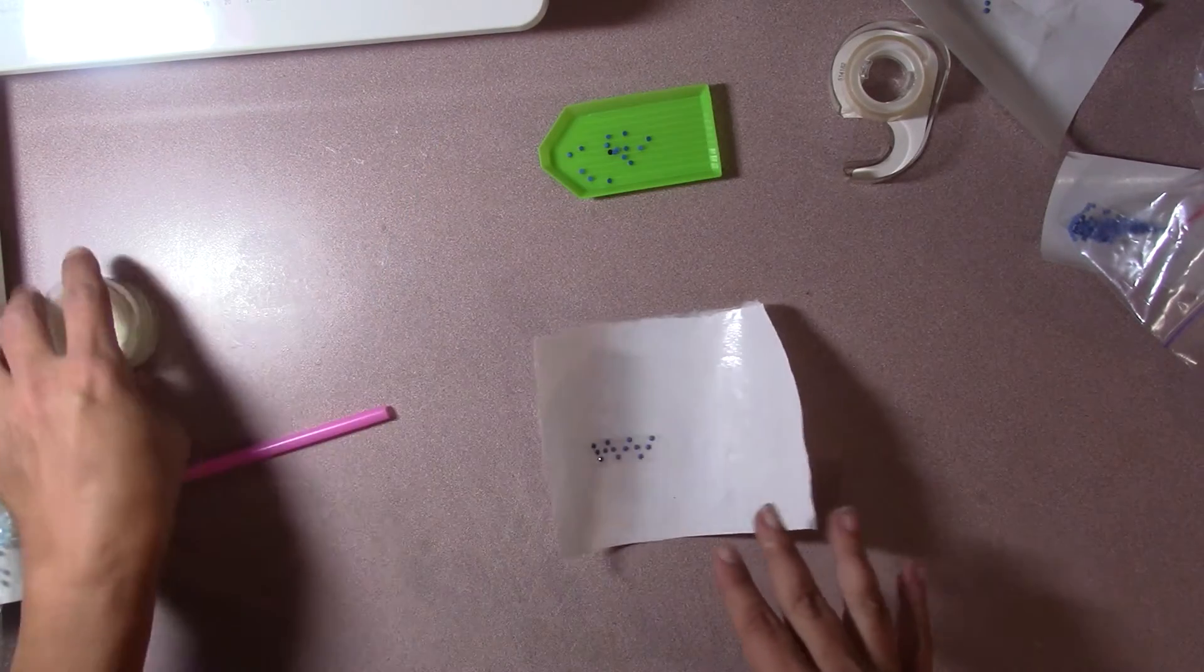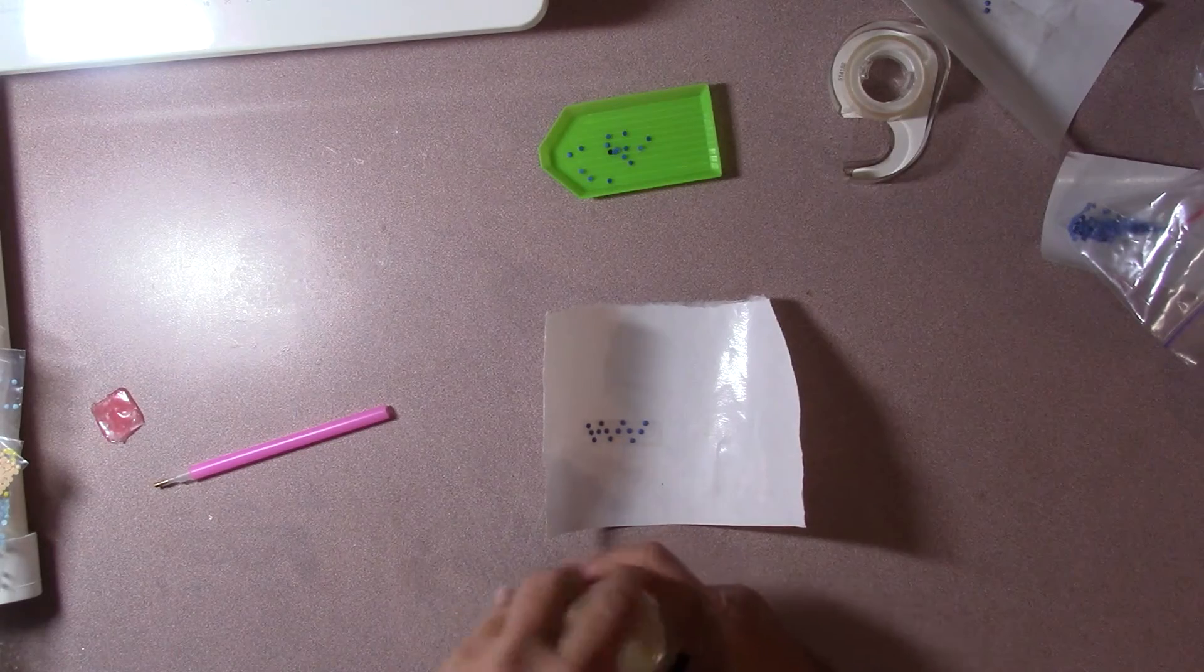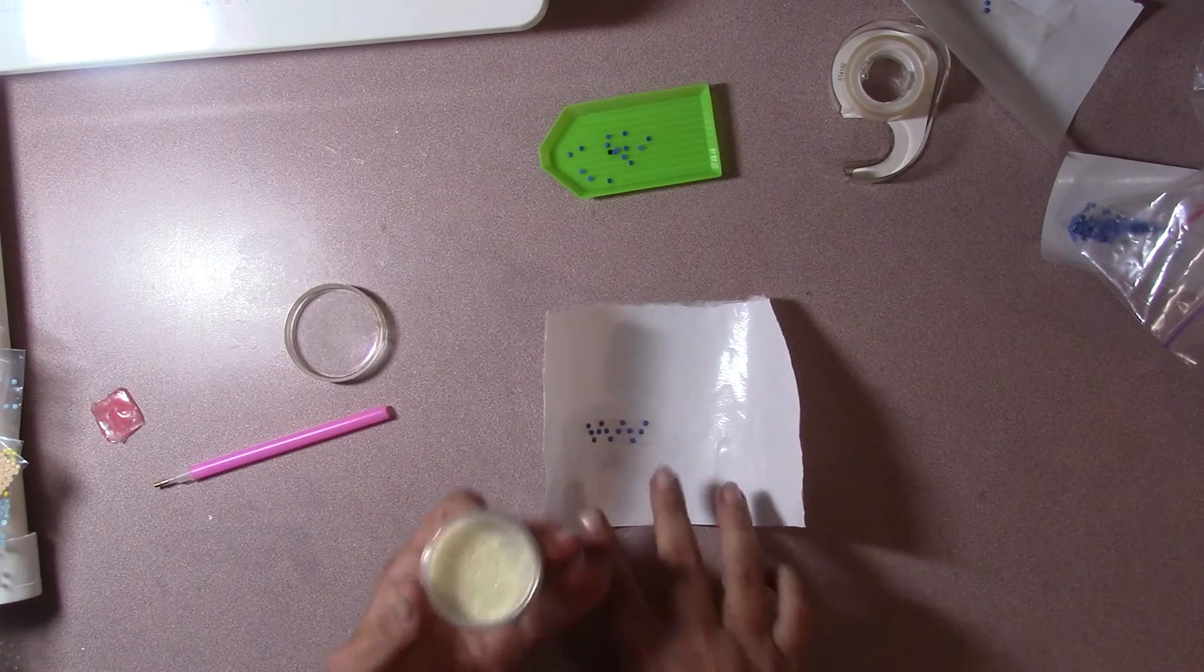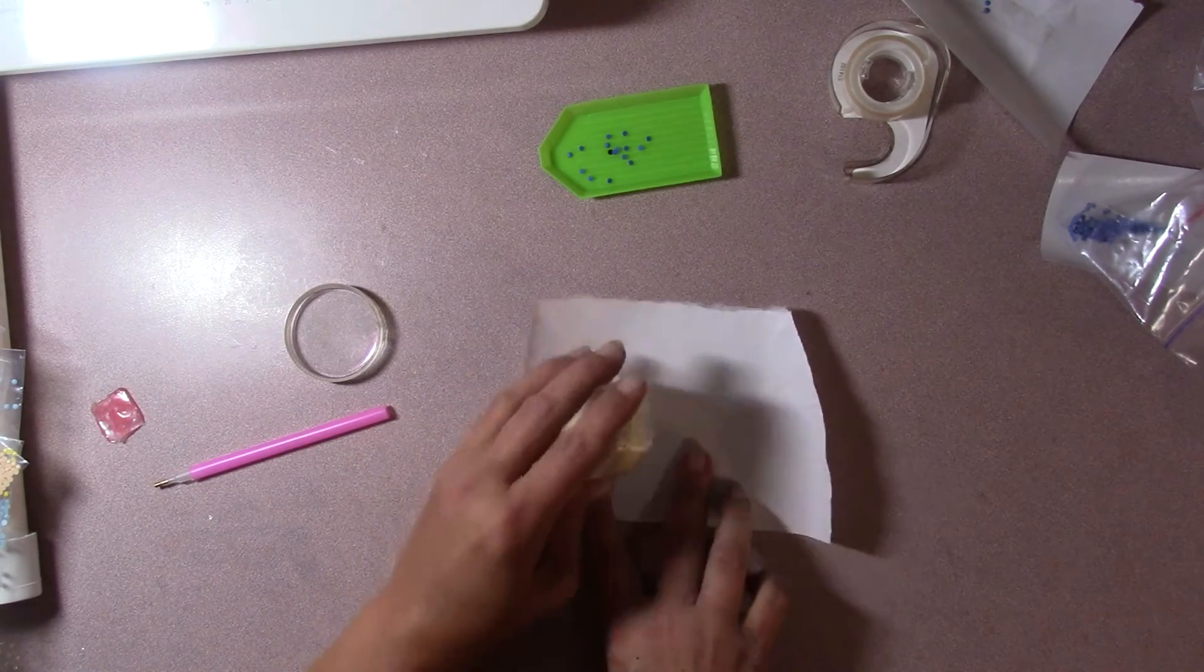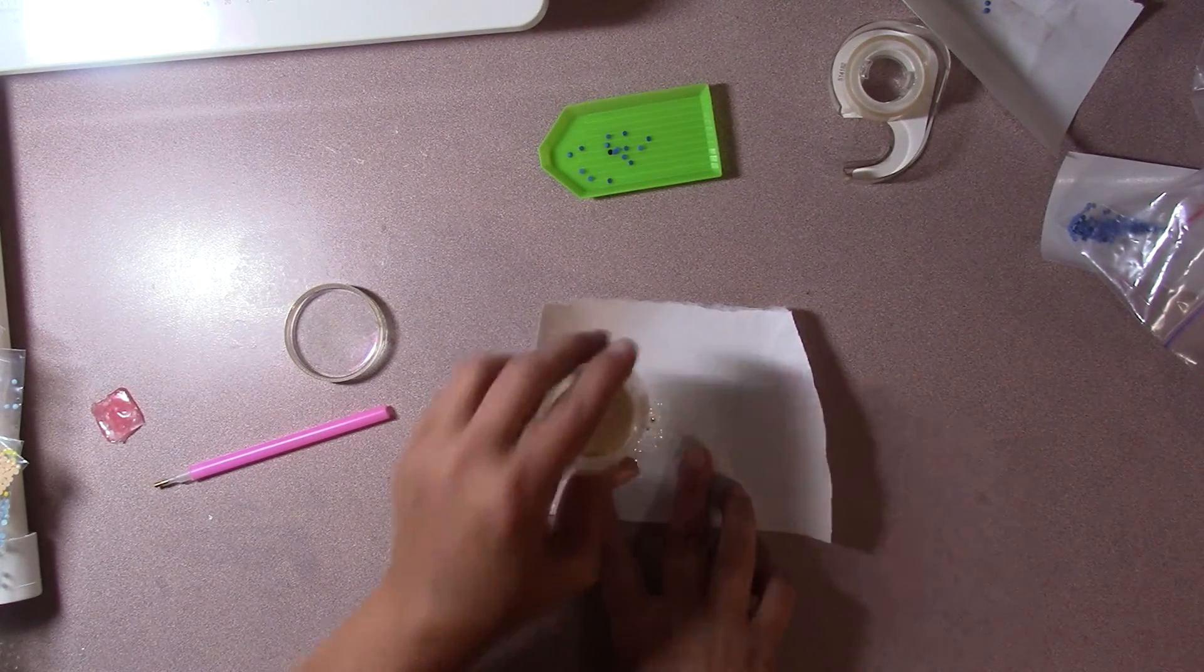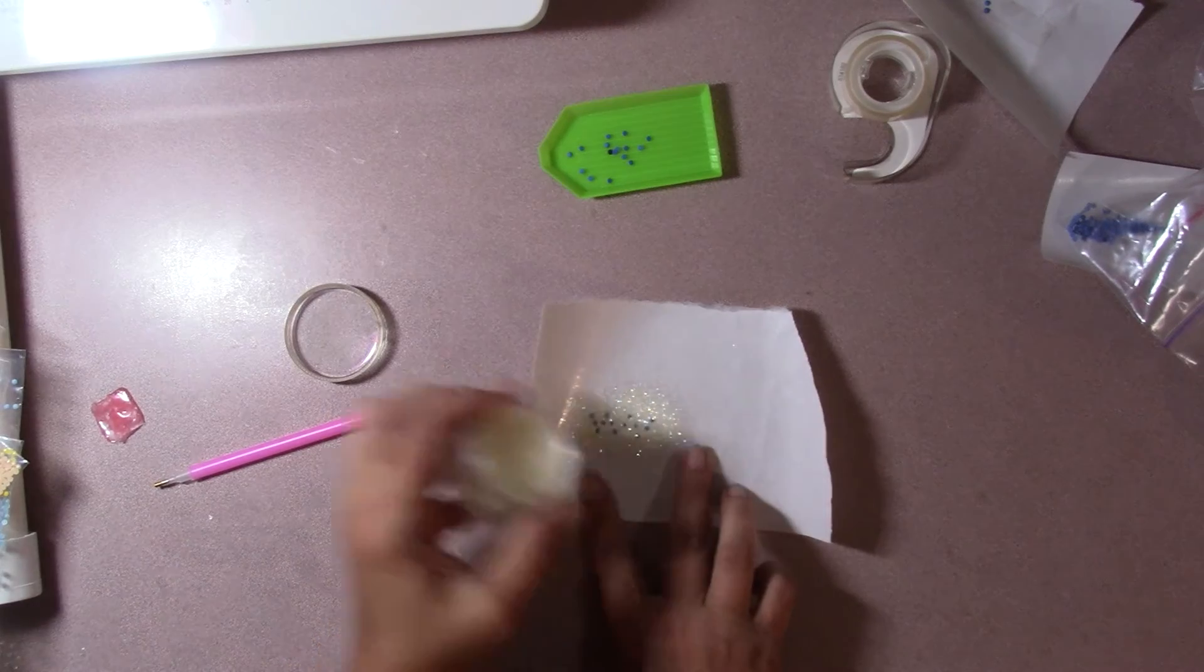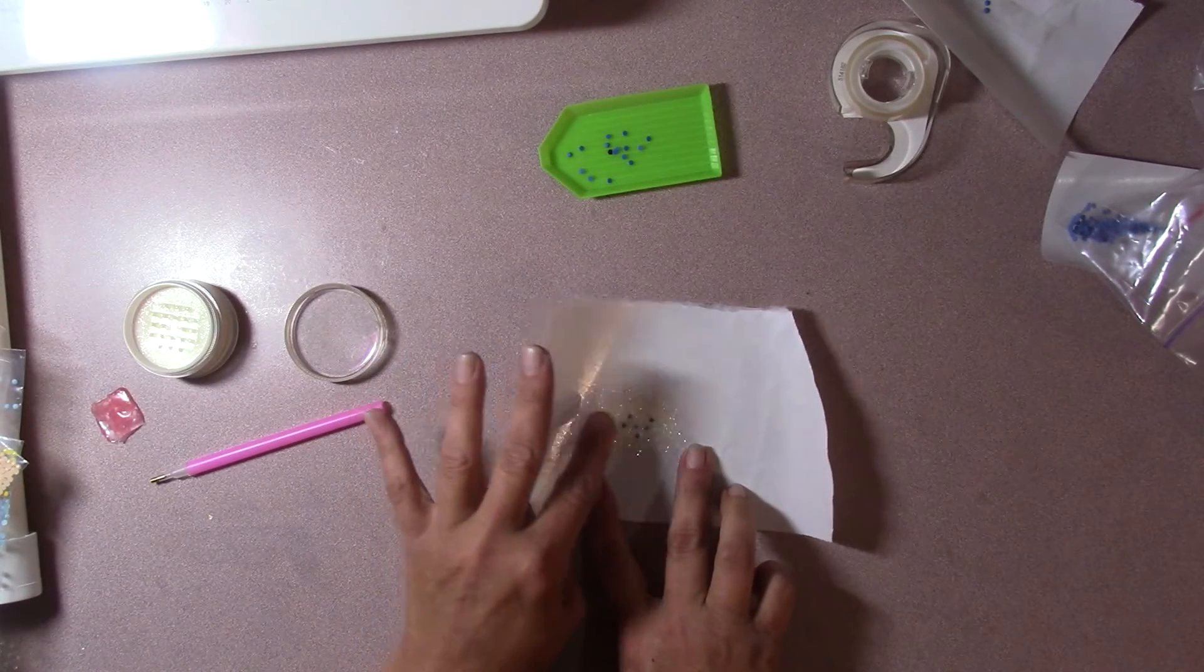And then, take some glitter and pour over it. That way, it takes up the rest of the tape. Kind of smoosh it in there.